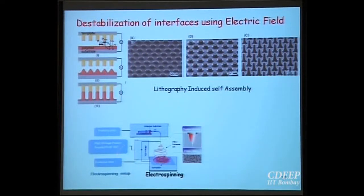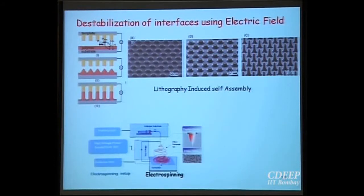Another destabilization occurs in electrospinning, where an electric field is applied between two electrodes to draw a polymer and produce very fine threads of the order of nanometers.